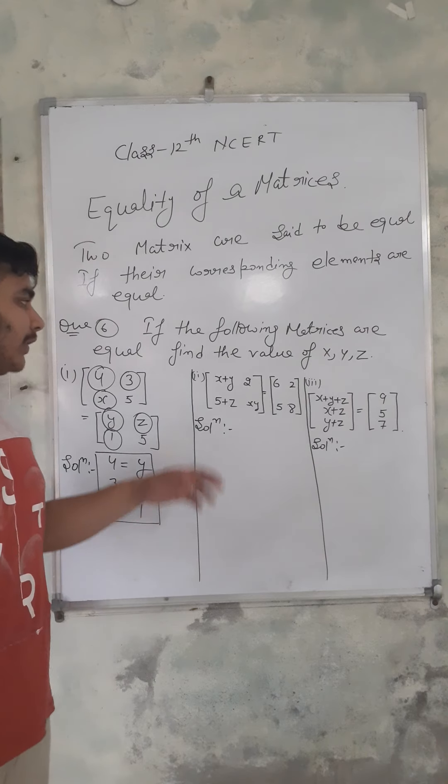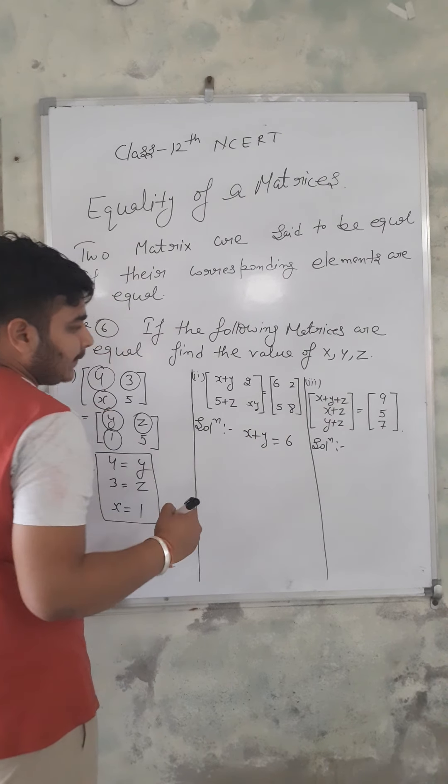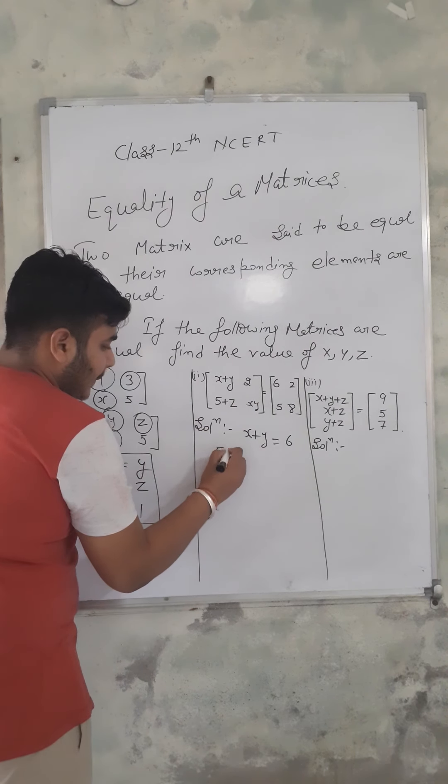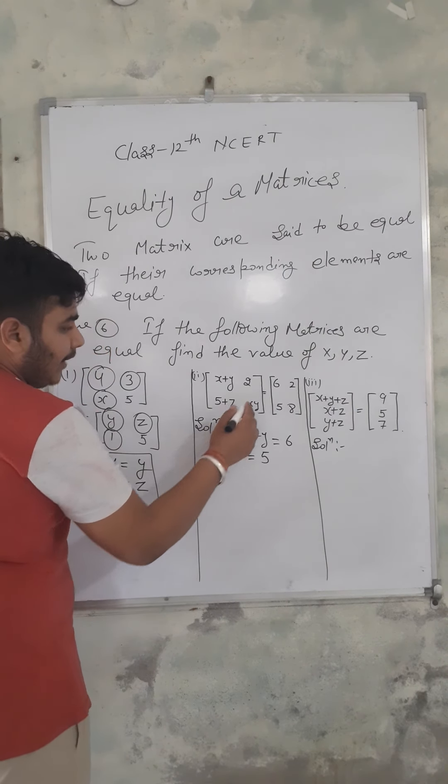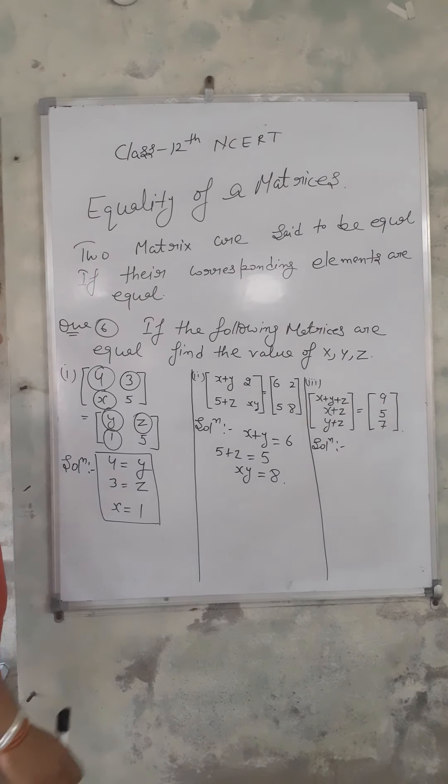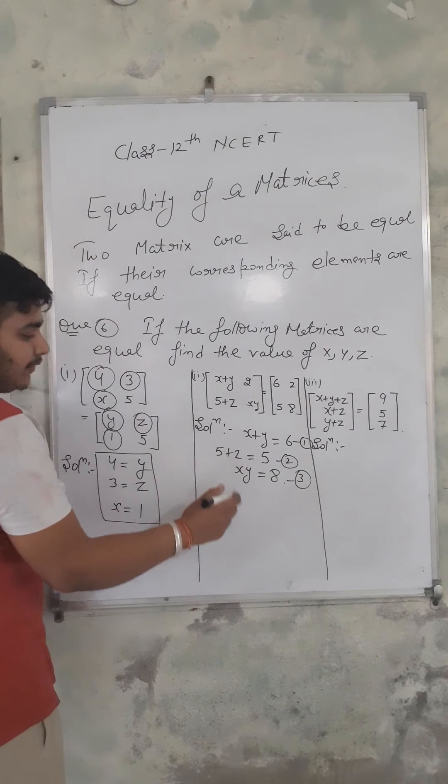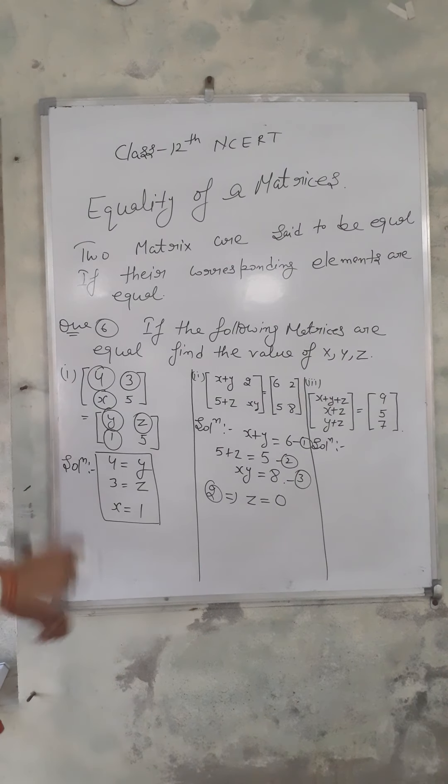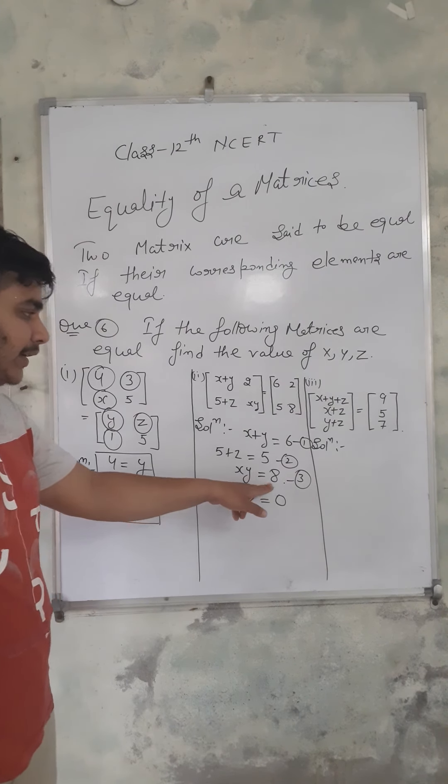After this, we go to the second part. x plus y equals 6, 5 plus z equals 5, and xy equals 8. This is equation number one, this is equation number two, and this is equation number three. From the second equation, the value of z is 5 minus 5, so z equals zero. Now we have x plus y equals 6 and xy equals 8.